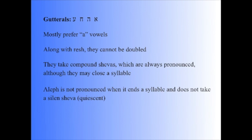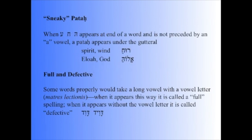But the gutturals and the Resh do not like being doubled and so they do not take a Dagesh. The gutturals take hataf-shvas as we just saw, and these are always pronounced even when they close a syllable. Aleph is not pronounced when it ends a syllable and does not take a silent shva. This is called a quiescent Aleph. There is a concept that we call, just for fun, a sneaky patach.